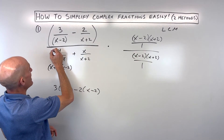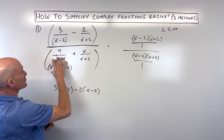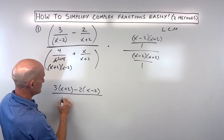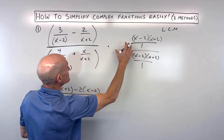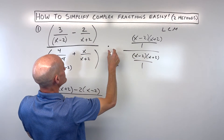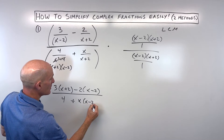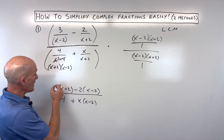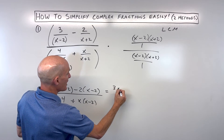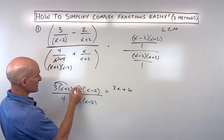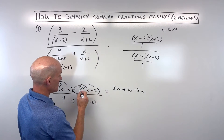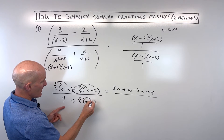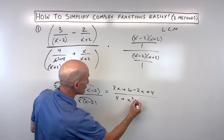When I take this quantity and distribute it to the second fraction, the x plus two in the denominator and x plus two in the numerator cancel. I'm just left with x minus two times two — no denominator, those canceled. Now looking at the denominator: if I distribute to the first fraction, x plus two times x minus two cancels with x plus two times x minus two, leaving just four. When I distribute to the second fraction, the x plus two's cancel, leaving us x minus two times x. We've cleared that complex fraction — we just have one fraction bar now.